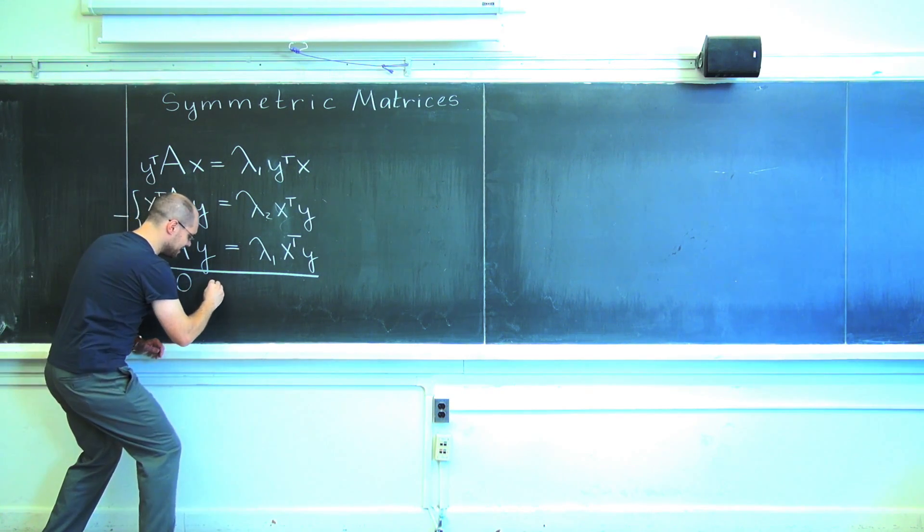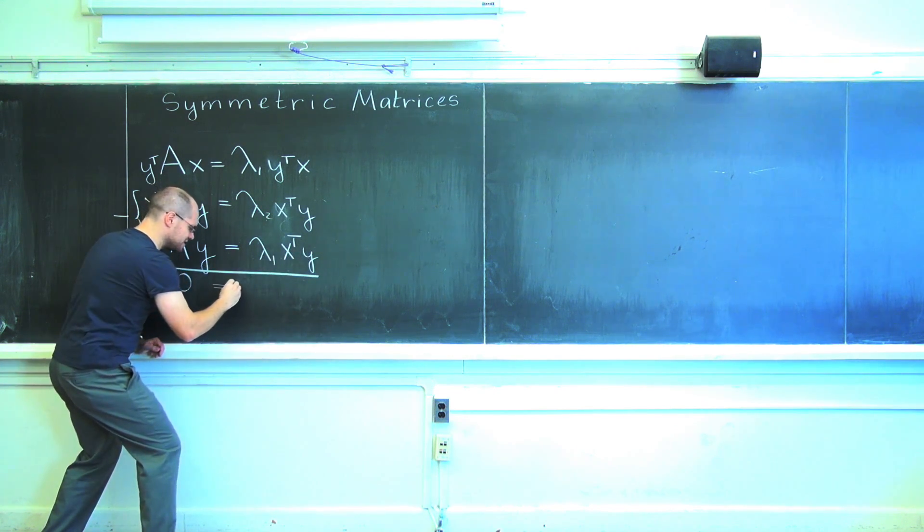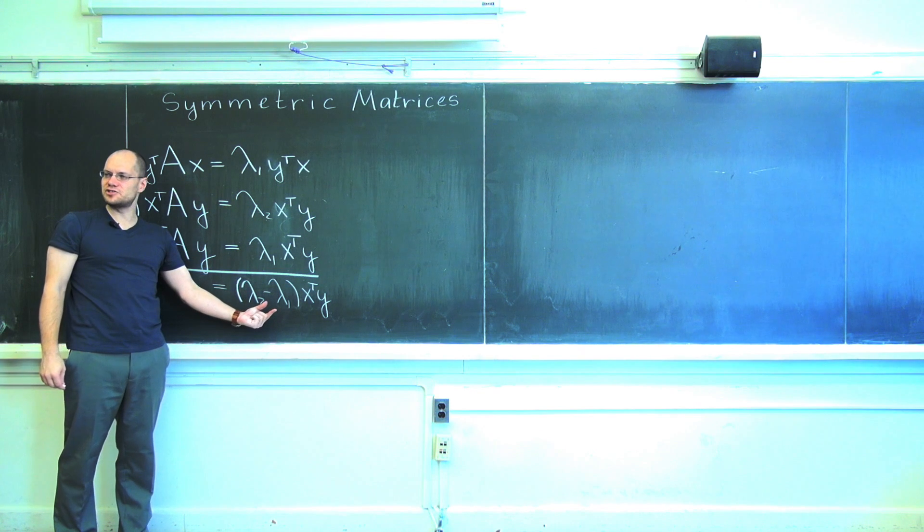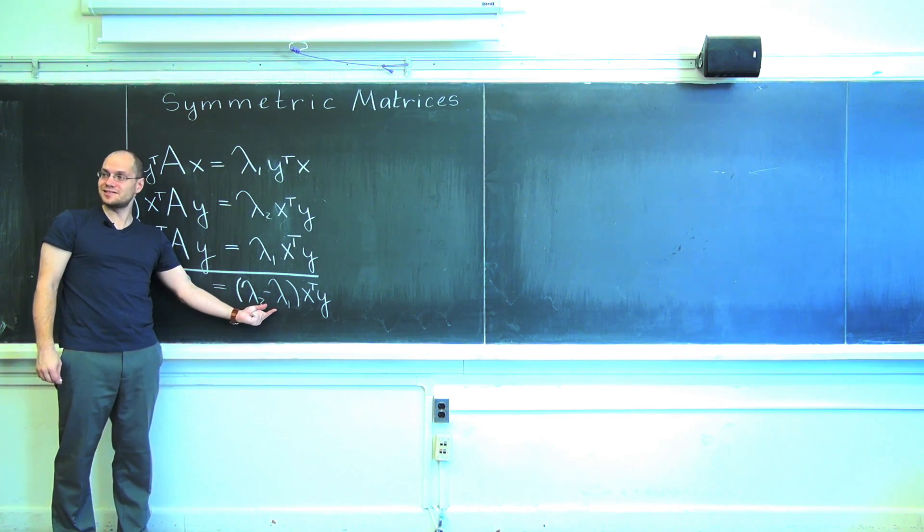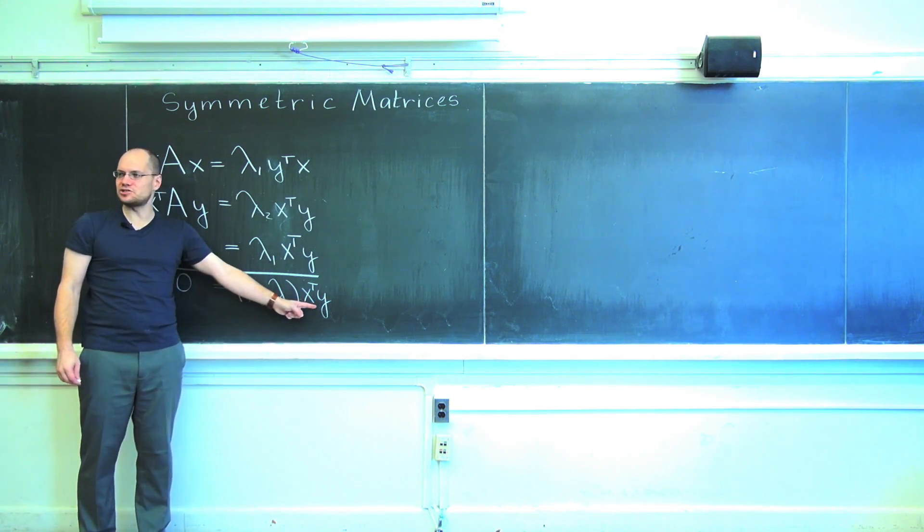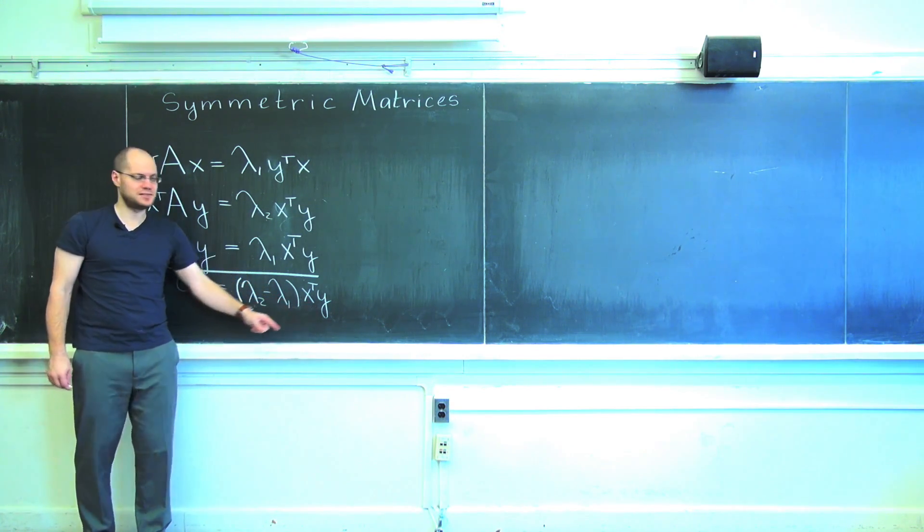And on the right hand side I get the dot product gets factored out. Now I said the eigenvalues are distinct, so this is not 0. And because the product is 0, X transpose Y must be 0.